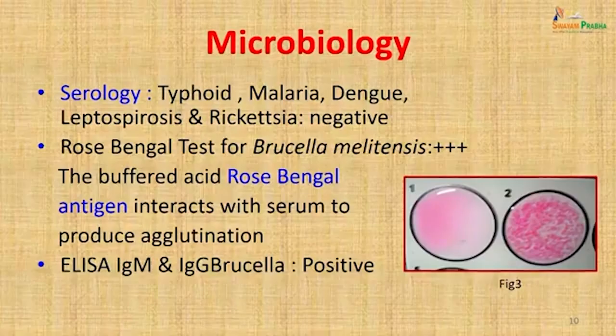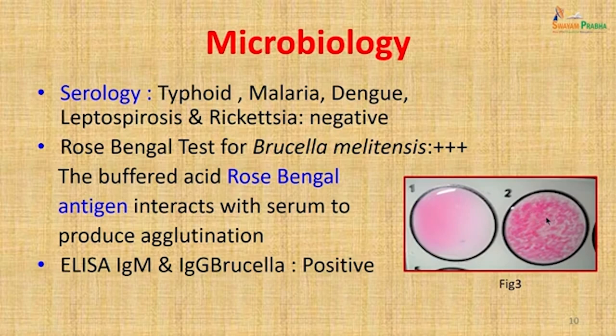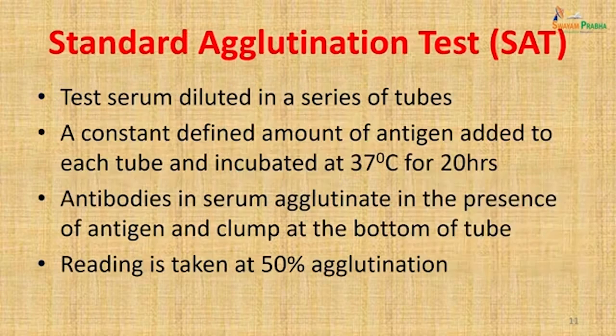Microbiological investigation was started keeping the bacteria causing pyrexia of unknown origin in mind. Blood was collected in a plain bulb, serum was separated, and tests were done for diagnosis of typhoid, malaria, dengue, leptospirosis, and rickettsia — all these tests were negative. The Rose Bengal test was then done for brucellosis. The buffered acid Rose Bengal antigen interacted with the serum and produced agglutination in this patient — it was Rose Bengal test positive. ELISA IgM and IgG for Brucella were also positive, giving a strong indication that we were dealing with brucellosis.